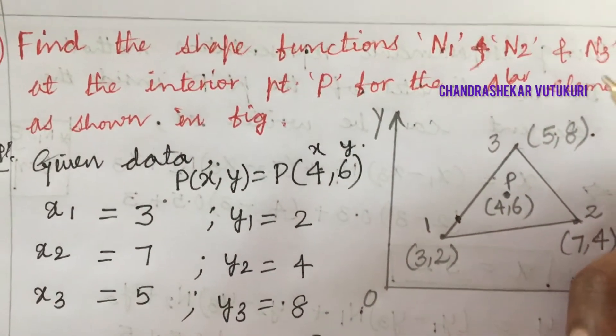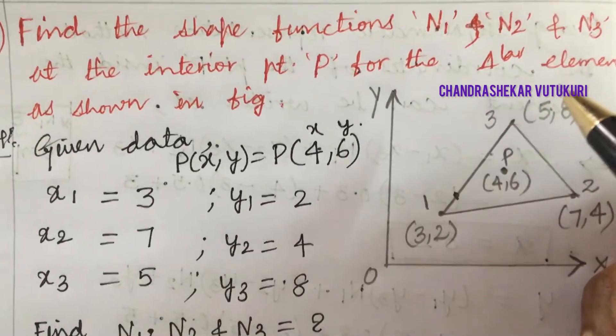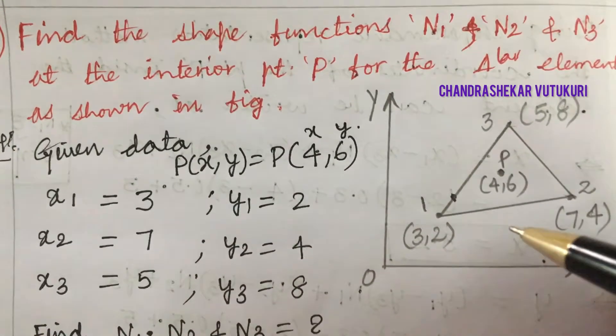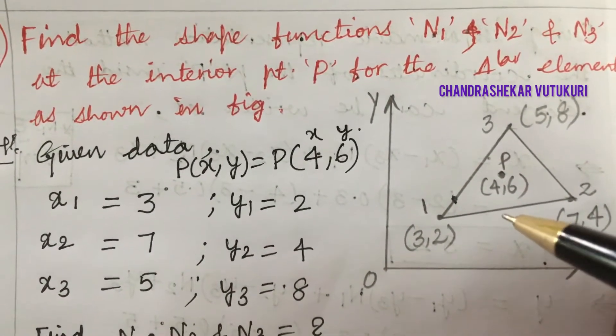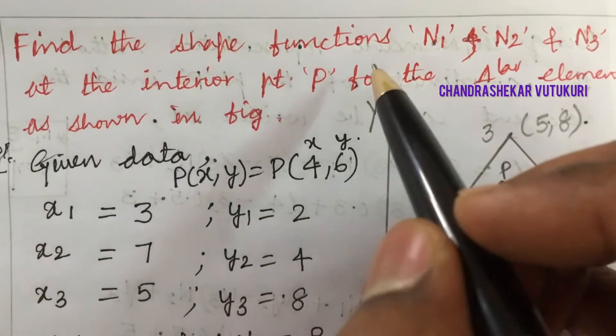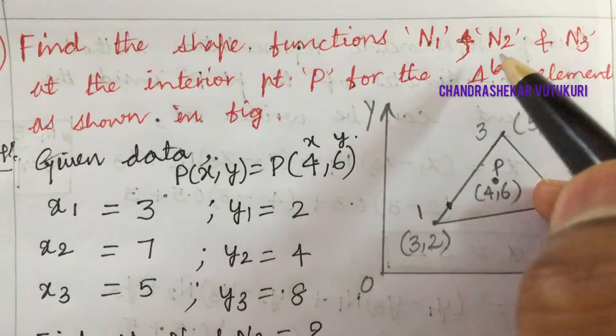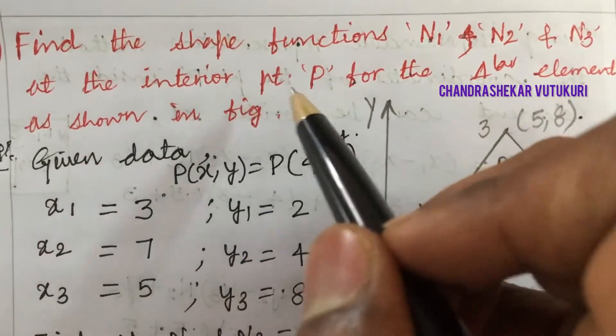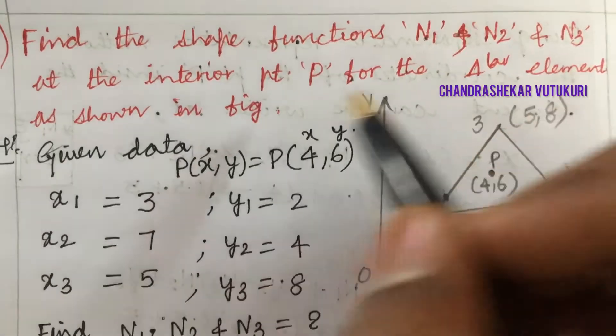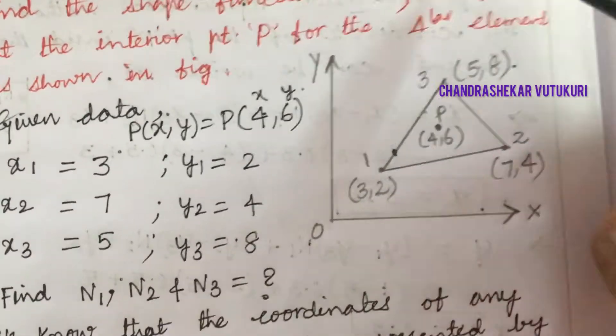Welcome back students. Sometimes questions related to the constant strain triangle will be asked in examinations. Let's look at the question and work out what is asked. Find the shape functions N1, N2, and N3 at the interior point P for the triangular element as shown in the figure.